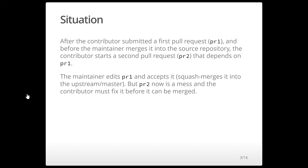I just assume that, so I can move on and start working on pull request two. But real life is not as good as it looks. The maintainers of the source repository do merge pull request one, but with some changes. By the time the contributor continues to work on pull request two, the pull request is not perfectly in sync. There may not be a git conflict sensu stricto, but still there are some changes that need to be done on pull request two to adapt to the changes introduced by the maintainer.